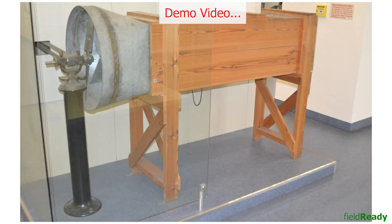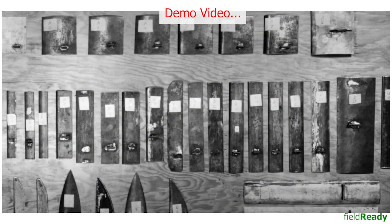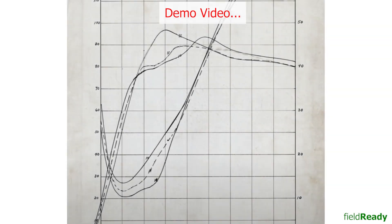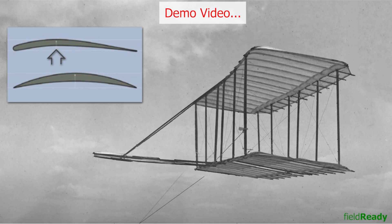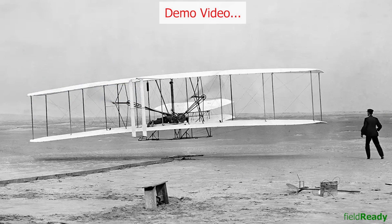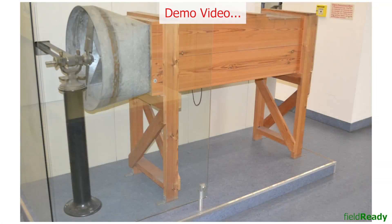It was a very simple wooden box with some fan at the start. They tested nearly 200 different shapes of wings and prepared a detailed uplift and drag coefficient table from the wind tunnel test, arriving at the best shape of wings that resulted in maximum uplift force for their aircraft. It was this moment when things went from south to north for them, and they were able to invent the first flying aircraft in December 1903.